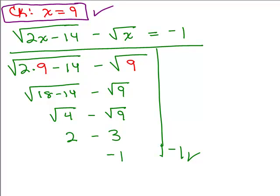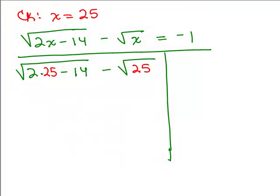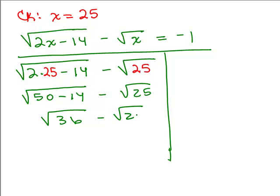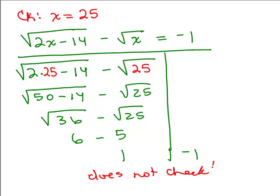Now we check x equals 25. Substituting into the original equation: underneath the first square root we get 50 minus 14, which is 36. Square root of 36 is 6, square root of 25 is 5, so the left-hand side gives 6 minus 5, which is 1. But the right-hand side is negative 1, so this does not check. Therefore x equals 25 is not a solution — it is an extraneous root.